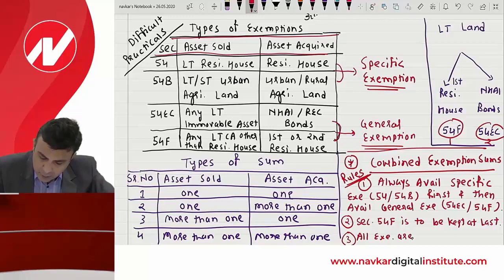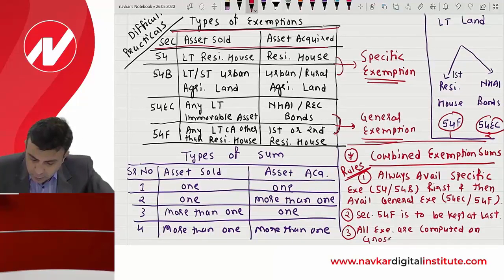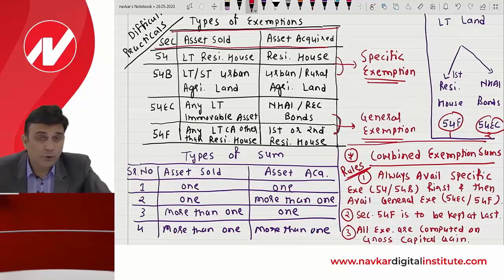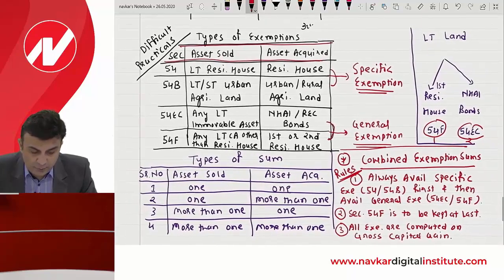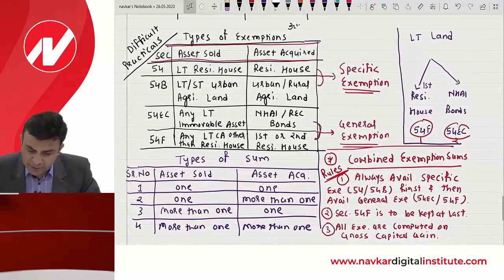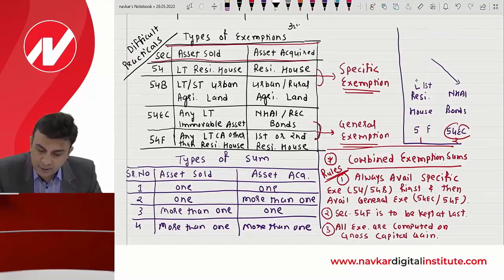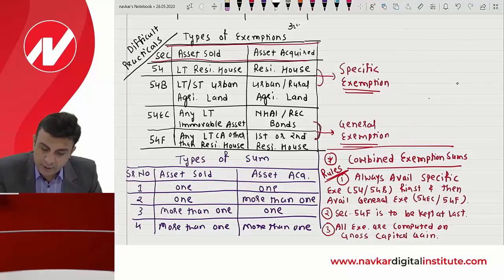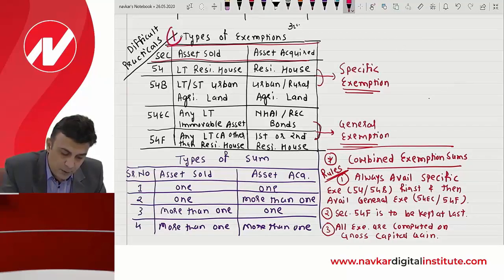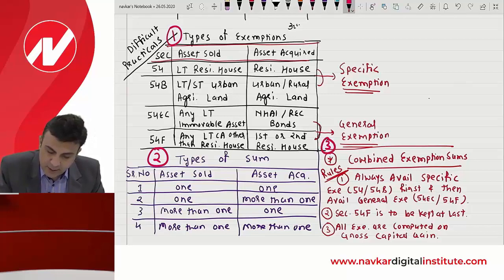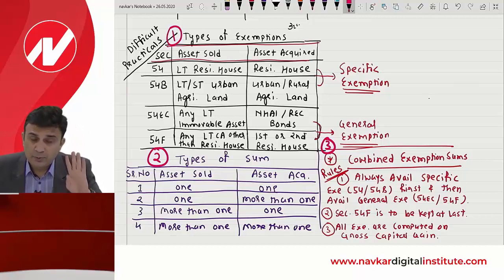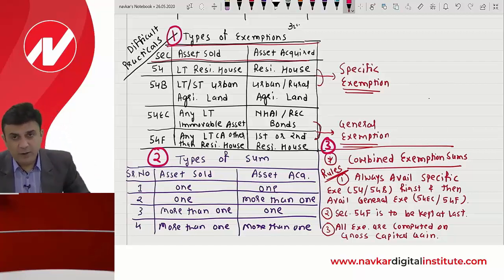Rule 3: All exemptions are to be computed on the gross amount of capital gain. यह gross amount क्या है और यह कैसे compute होगा वो मैं अभी समझाता हूँ। आप पहले बिना tension लिए यह copy कर लीजिए। Combined exemption के rules के साथ हम 2+1, 3 combined exemption sums पे जा रहे हैं, with the nitty-gritty of the Capital Gain Account Deposit Scheme also.